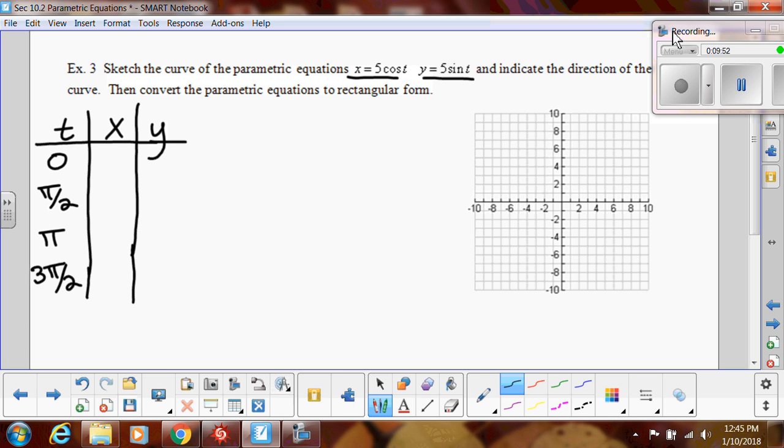So if I plug in zero for x, cosine of zero, remember, is one. So then one times five will give me five. And then if I do sine of zero, that's just zero. So my first point is five, zero. And when I plug in pi over two, cosine of that will be zero. And then sine of that is one. So this will be five.